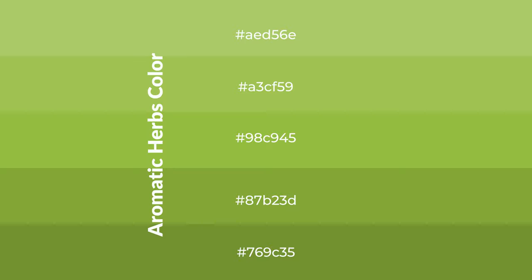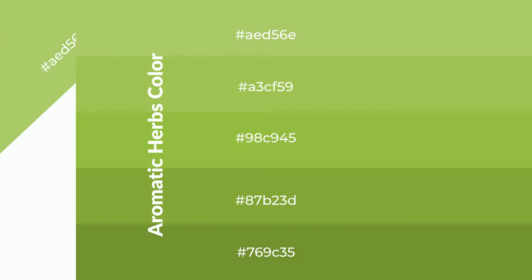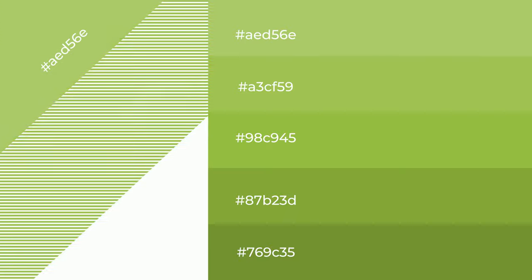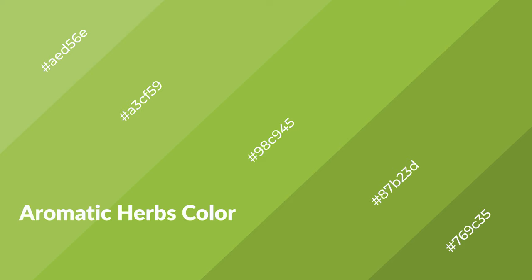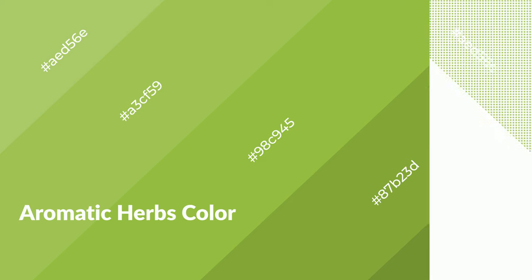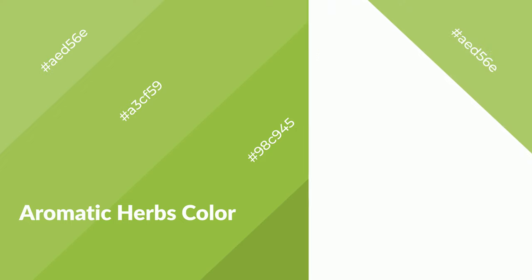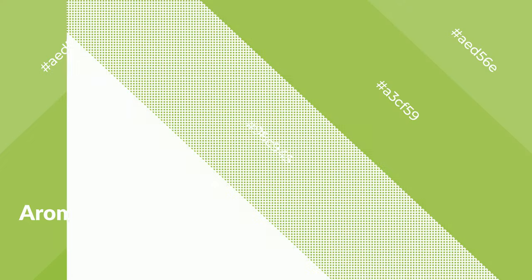To generate shades of a color, we add black to the color. Shades are used in patterns, 3D effects, and layers, and create depth and drama. Aromatic herbs is a warm color and it emits cozier and active emotions. Warm colors are symbols of warmth, fire, and heat.